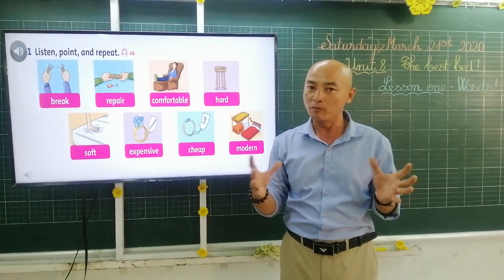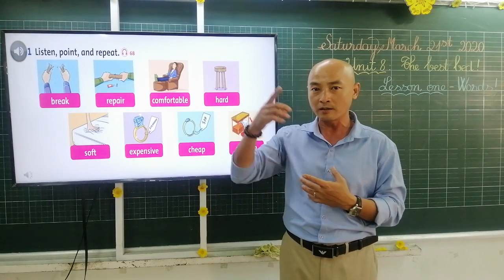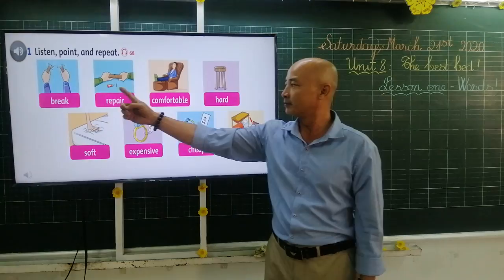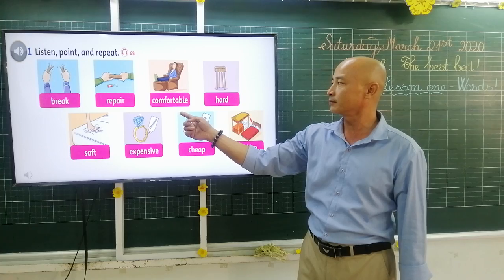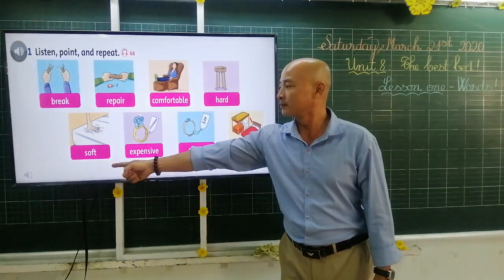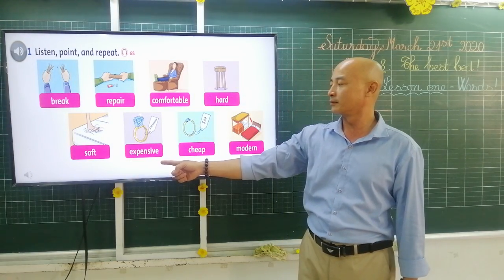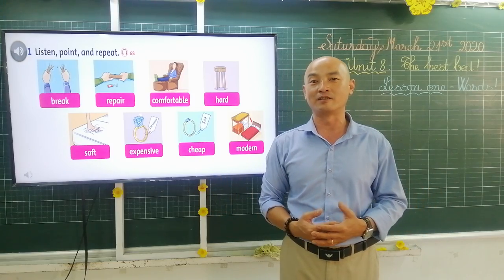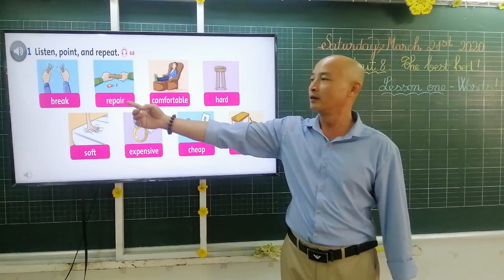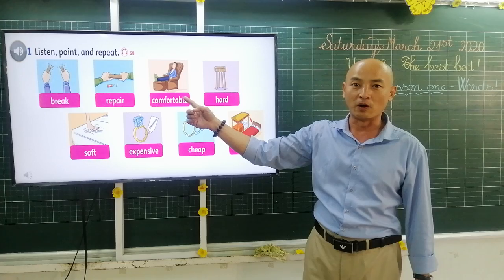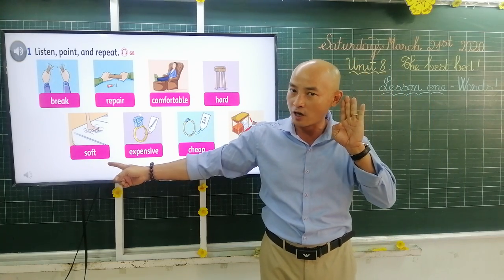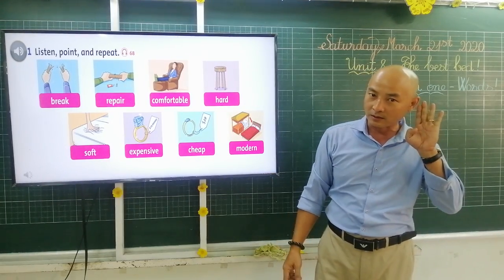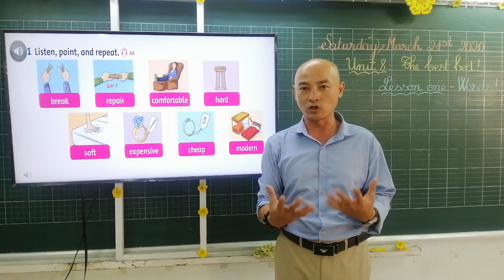After we have learned some words, now look at the screen again and try to listen and point to the word you hear. We can start — page 68 — listen and point: break, repair, comfortable, hard, soft, expensive, cheap, modern. Do you think that's easy? Now listen and repeat: break, repair, comfortable, hard, soft, expensive, cheap, modern. That is all the words — try to say them many times to remember.